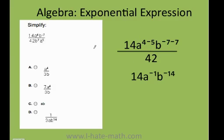I have 4 minus 5, that equals negative 1. Negative 7 minus 7 equals negative 14.